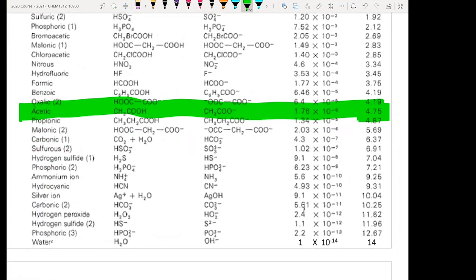The acetic acid with pKa of 4.75. Let me pull this up a little bit more for you. So you can see the pKa of acetic acid is 4.75. So you start from there.